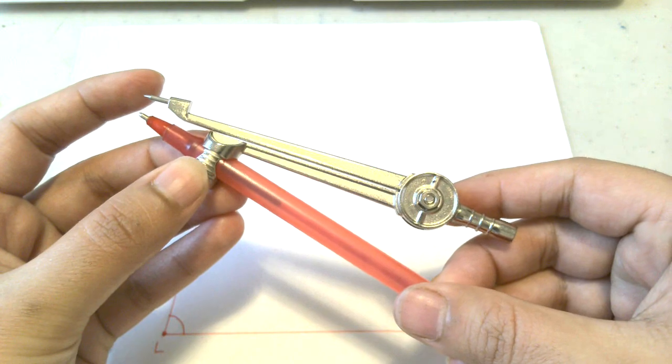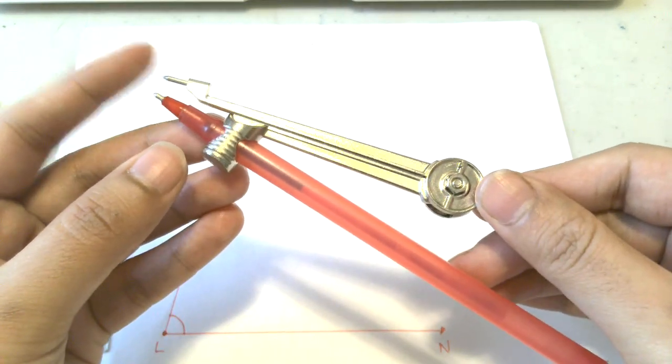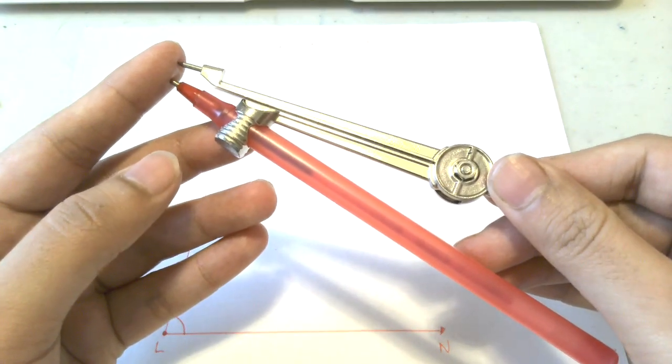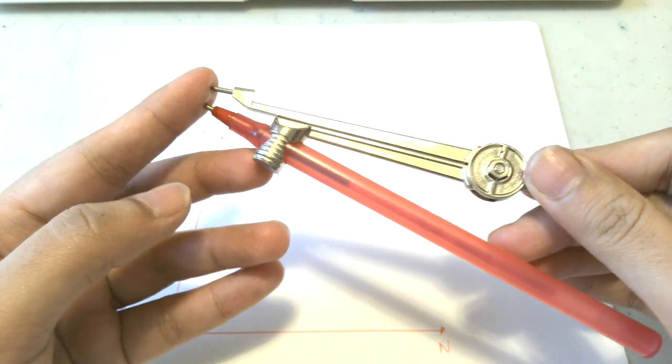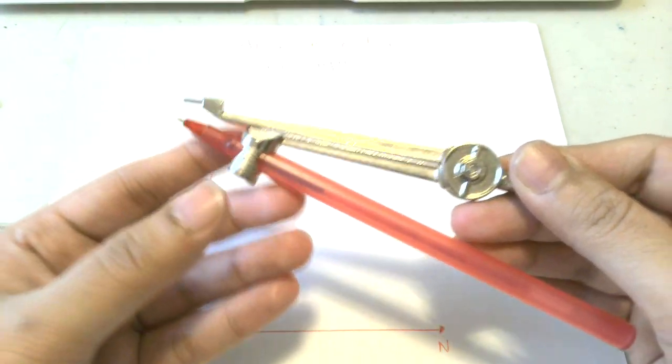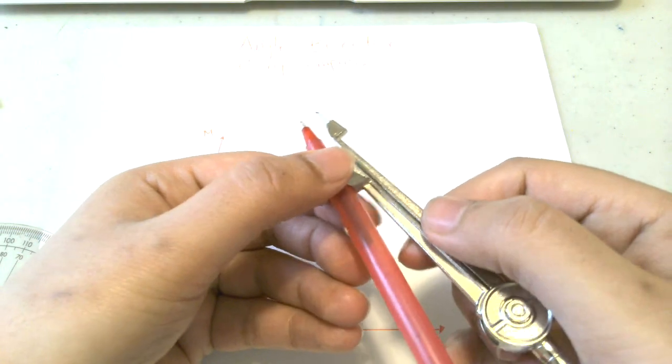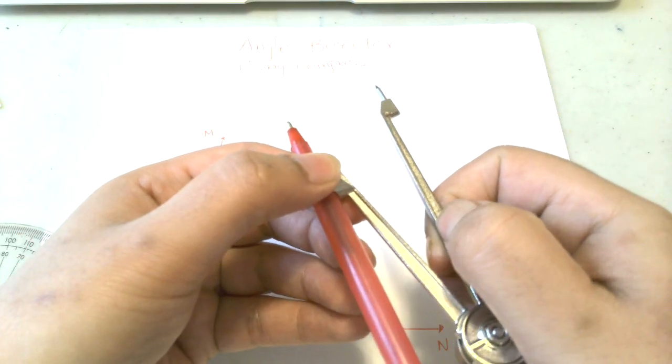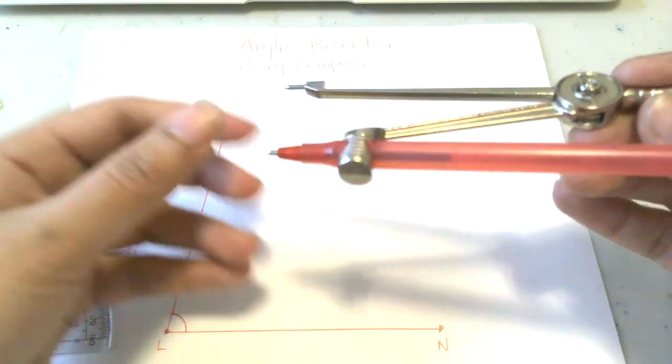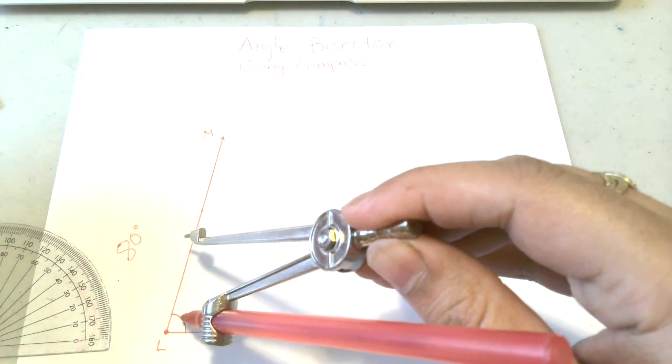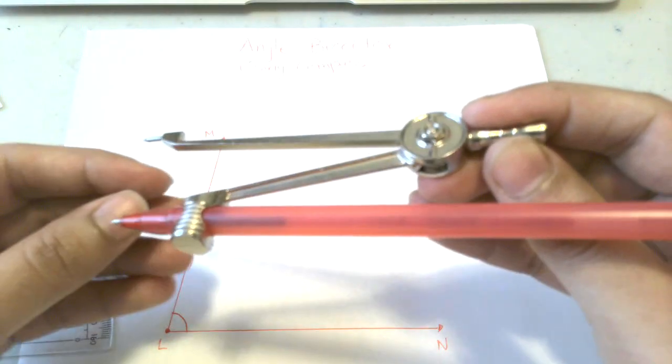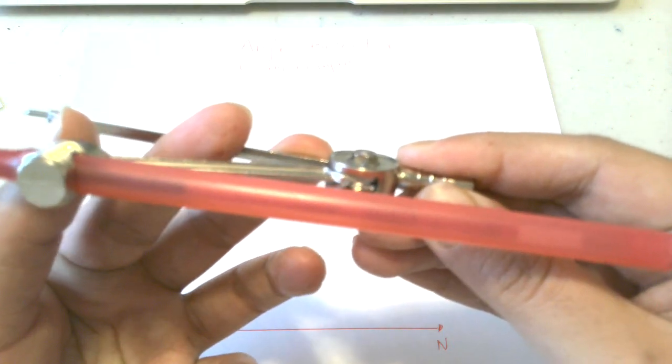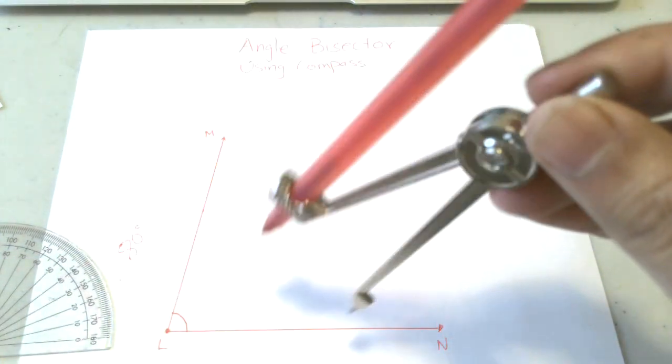Make sure your pen or pencil aligns with the pointer of your compass. If it's not aligned, then you won't have a proper angle bisector. It should be aligned. Now you can open it as much as you want. I'm just opening it a bit small because we don't have a big paper.